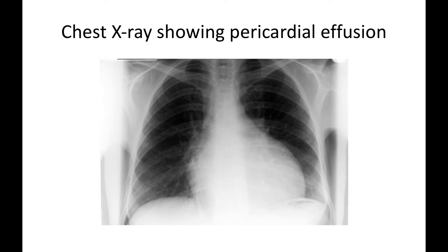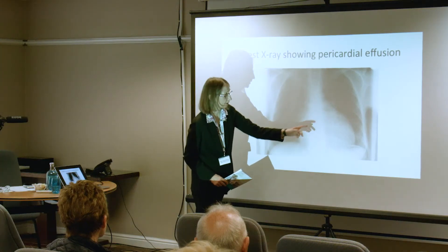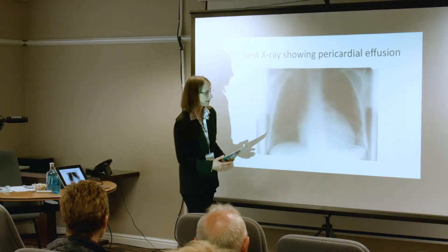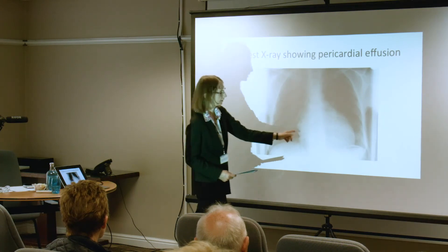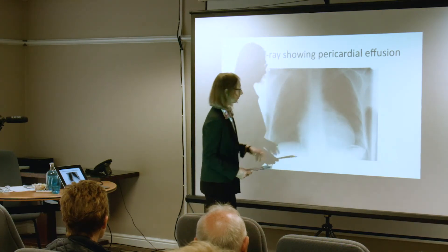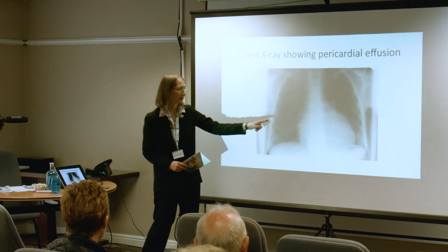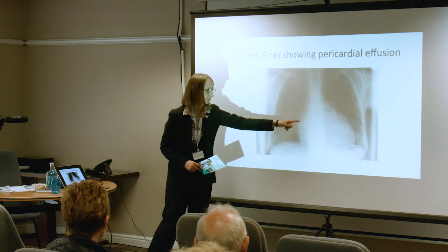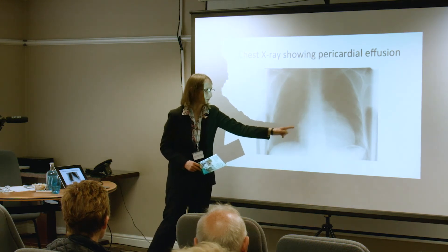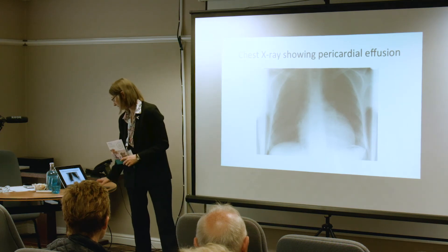This is an example of a chest X-ray. This person has a very large heart — much larger than it ought to be. These other lung fields are quite clear, but this person had what's called a pericardial effusion — fluid surrounding the heart — which had to be treated.